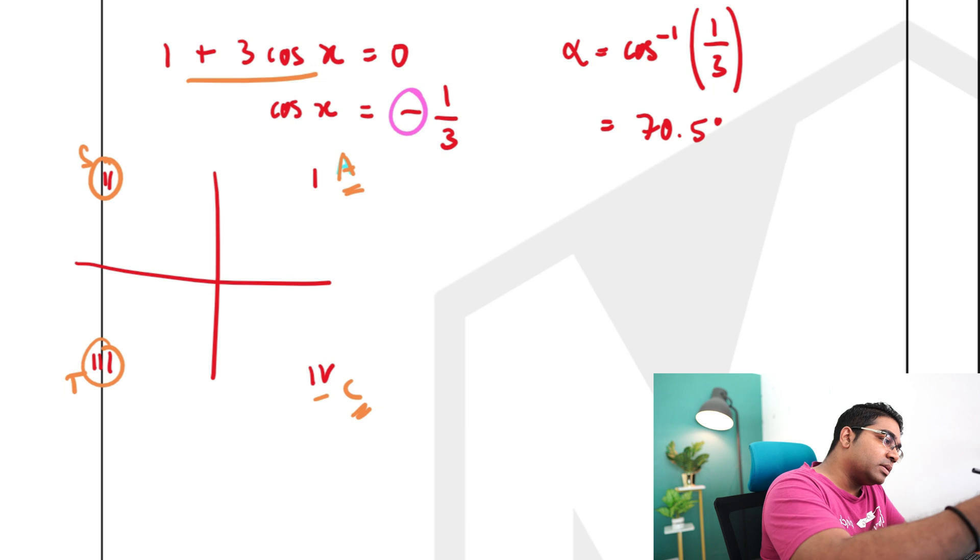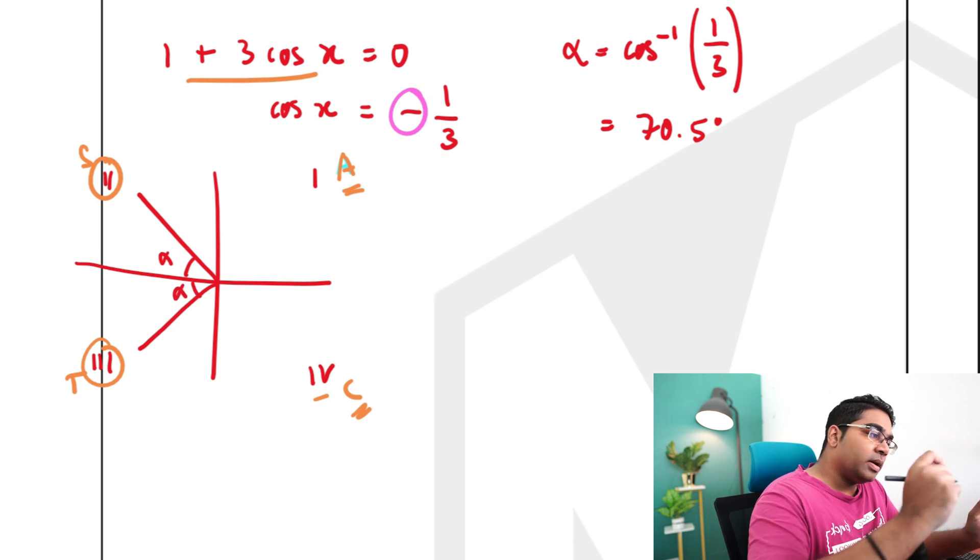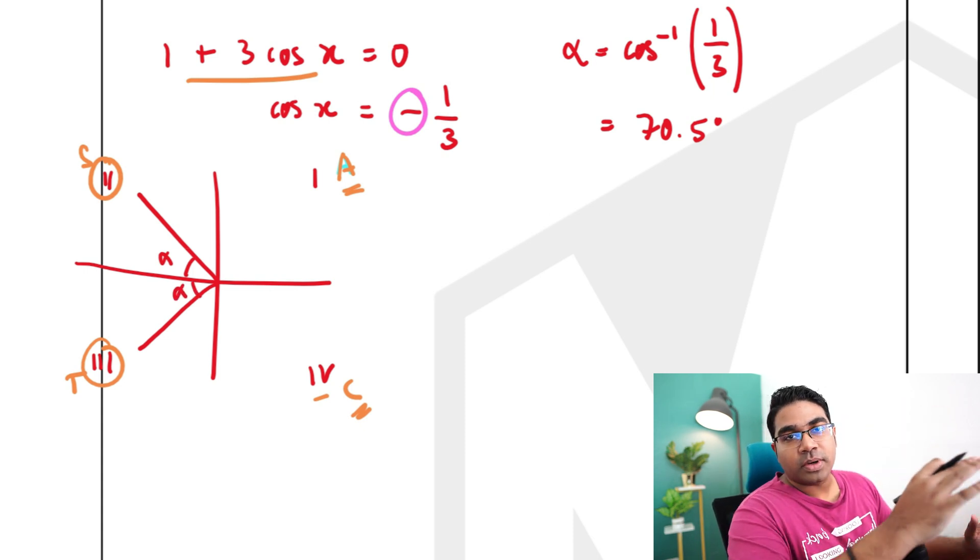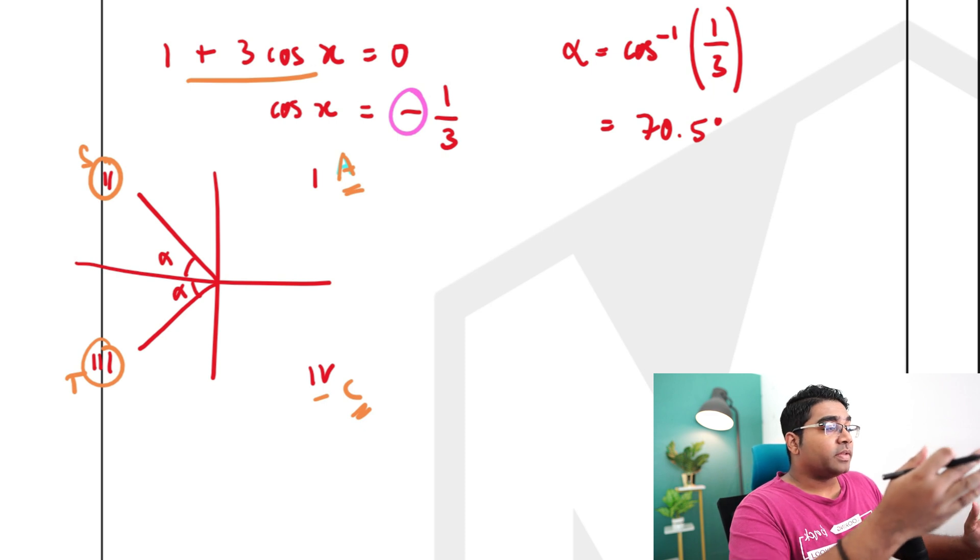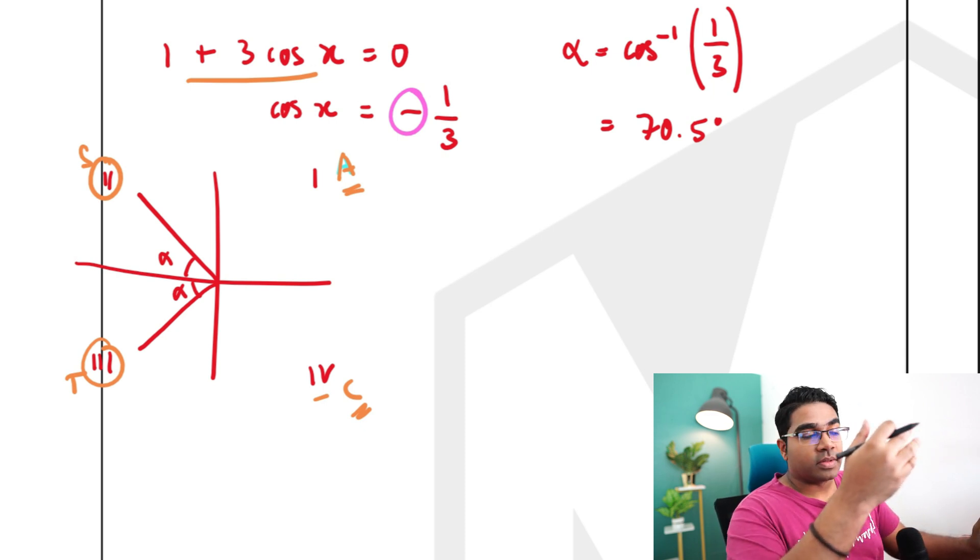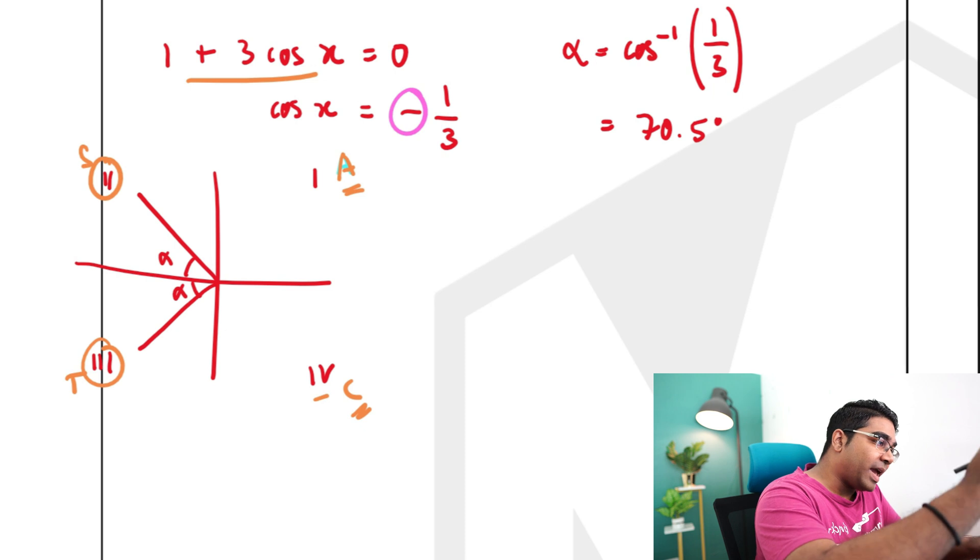So that means this is our angle. This will be alpha and this will be alpha. Now we're not interested in alpha here. What we want to find is theta. The value of theta that satisfies cos of x is equals negative 1 over 3. So basically, in this case, we're finding x.